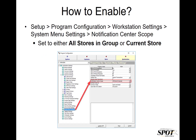To enable the Notification Center, simply go to Setup, Program Configuration, Workstation Settings, System Menu Settings, Notification Center Scope. You can set this to either All Stores in Group or Current Store based on the need of the workstation. Because this is a workstation setting, you will need to enable this on multiple workstations as you see fit.